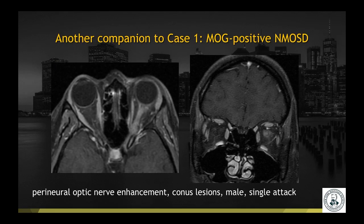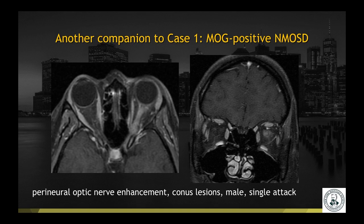A companion case of MOG-positive NMO spectrum disorder shows perineural optic nerve enhancement. Rather than enhancement of the optic nerve itself, you often see this ill-defined fuzzy enhancement along the optic nerve. Patients often have cord lesions that are lower down, involving the conus. In terms of demographics, they are more likely to be male, and they tend to have a single attack rather than multiple attacks.